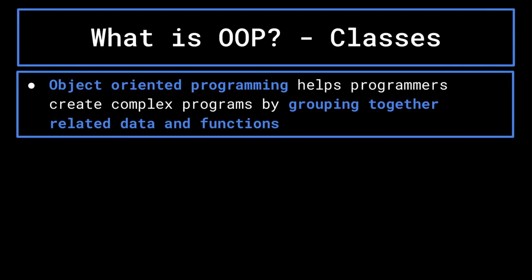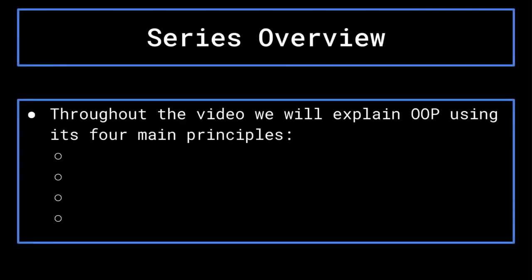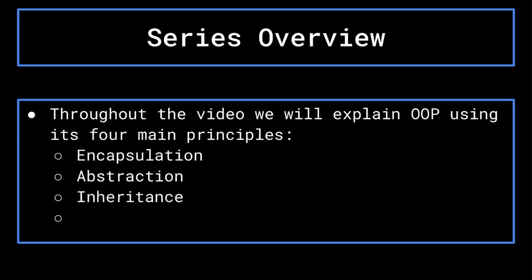Essentially, object oriented programming is the best tool programmers have right now to create complex programs by grouping together related data and functions. Throughout the course of this video, we are going to be getting into detail on how all of this works using the four main principles of object oriented programming: encapsulation, abstraction, inheritance, and polymorphism.